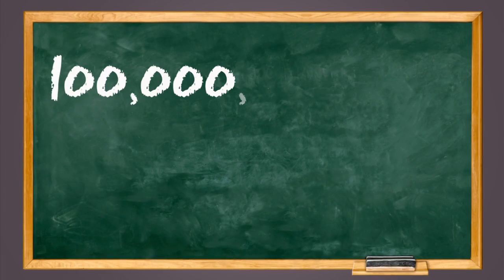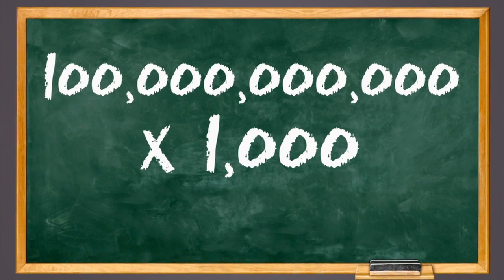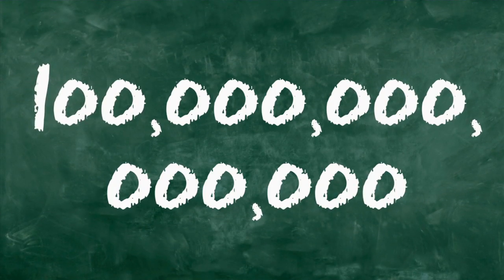Multiply each of these 100 billion neurons by the approximately 1,000 connections it can make, and you get 100 trillion data points, or about 100 terabytes of information.